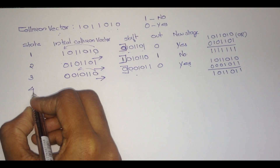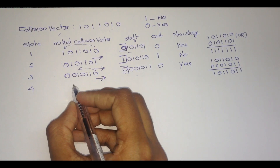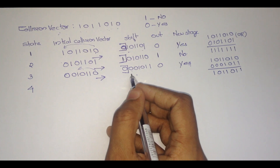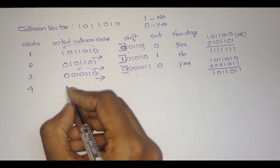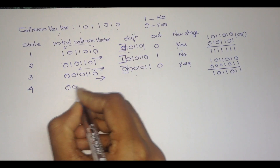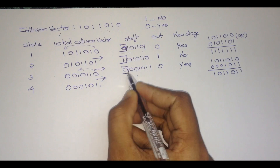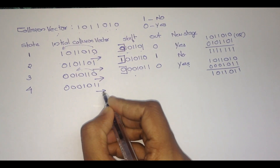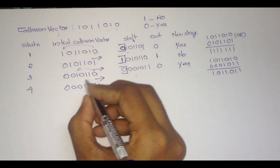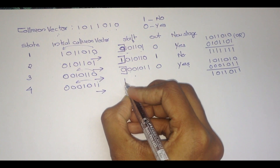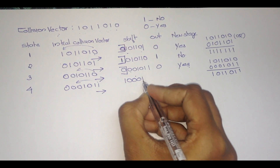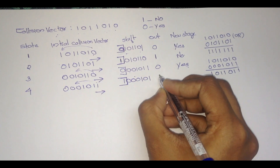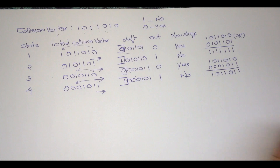Next, at the fourth state, we again write this value: 0, 0, 0, 1, 0, 1, 1. Here it is 0, so we don't want to change it. Then we perform the right shift. Here 1 will become at first: 1, 0, 0, 0, 1, 0, 1. We have to out this value, which is 1. Therefore, no new state occurs.